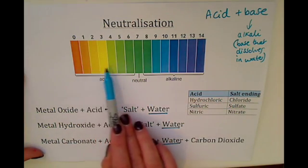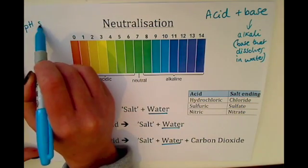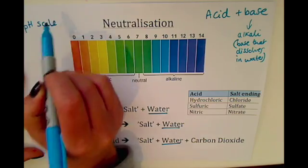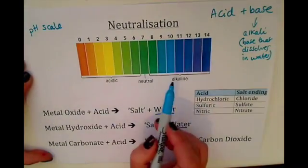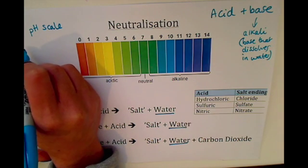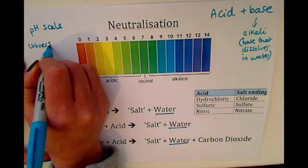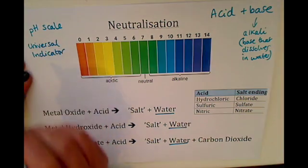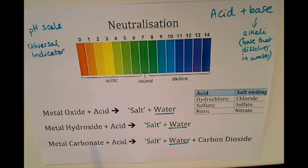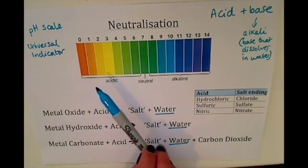This color chart here indicates the pH scale for acids and alkalis. The pH scale is measured by adding an indicator called universal indicator. If you add universal indicator to an acid or an alkali, it will turn a certain color depending on the pH of the acid or alkali.